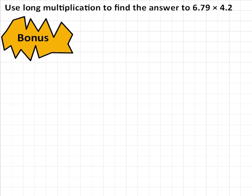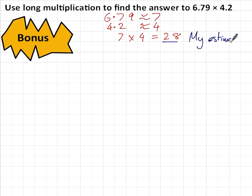Here we've got a very similar number. I've changed it to 6.79 times 4.2. So, an estimate to start with. 6.79 is roughly equal to 7. 4.2 is roughly equal to 4. 7 times 4 equals 28, and so 28 is my estimate. If you haven't mastered the kind of questions that appeared in video number 3, that's a 3-digit number times a 2-digit number, then you need to go back and have a look at that and watch it again and again until you've mastered it.